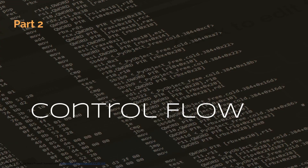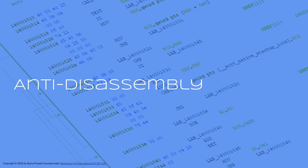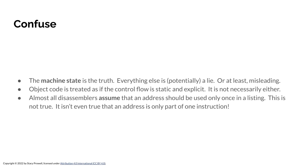Let's talk about control flow in assembly programs, and in particular, anti-disassembly. The actual state of the machine is the ground truth — everything else might be a lie or misleading. Object code is treated as if the control flow is static and explicit, but that's not necessarily true. The control flow can be modified, potentially at runtime, and you can do that in a number of ways. Almost all disassemblers assume an address will be used only once in a listing — that's not true. It isn't even true that an address is only part of one instruction; a single address might be part of multiple instructions.